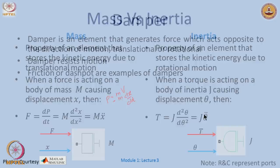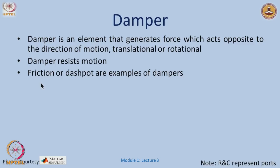The damper is an element that generates a force acting opposite to the direction of motion — it essentially resists motion. Examples include natural friction when walking or driving, and a dashpot. The damper is modeled as F = b·dx/dt, a linear relationship between force and velocity, where b is the damping coefficient. In rotational motion, the rotational damper is modeled as T = T_d·θ̇, a linear relationship between torque and angular velocity.